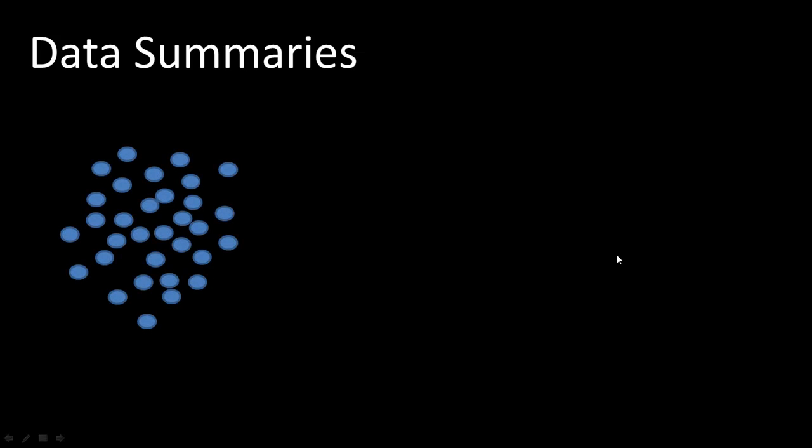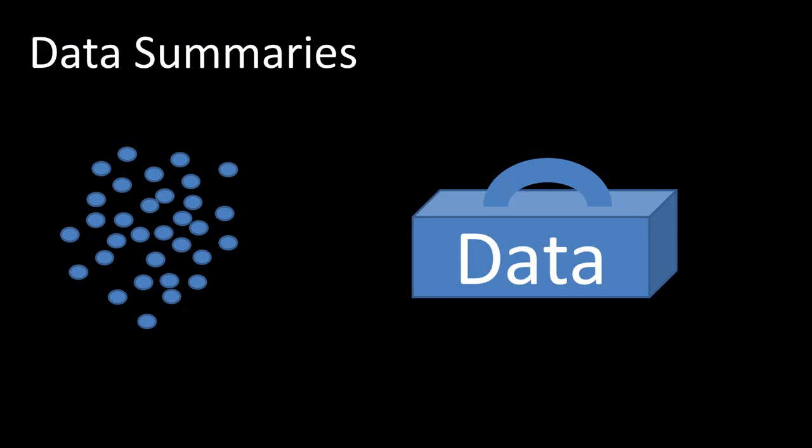One of the first things we want to do when we get a large data file is to simply summarize the data. Think of data as this unorganized, amorphous bunch of things. You've got a lot of data and don't have much understanding of what's in it. So the first thing is to get a handle on the data — rather than an unorganized mess, we want to have some understanding of what this data is all about.